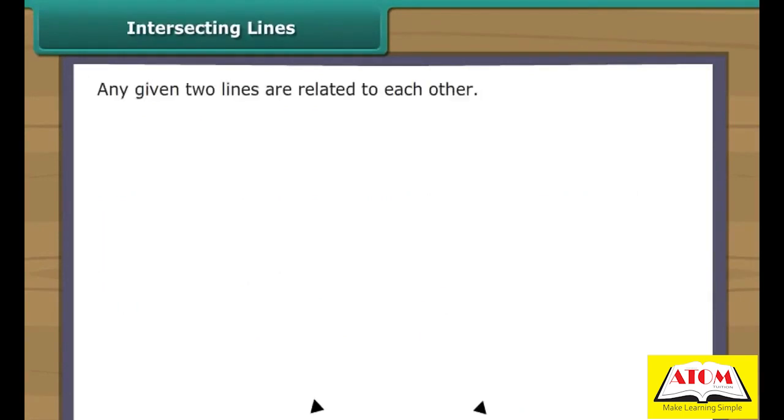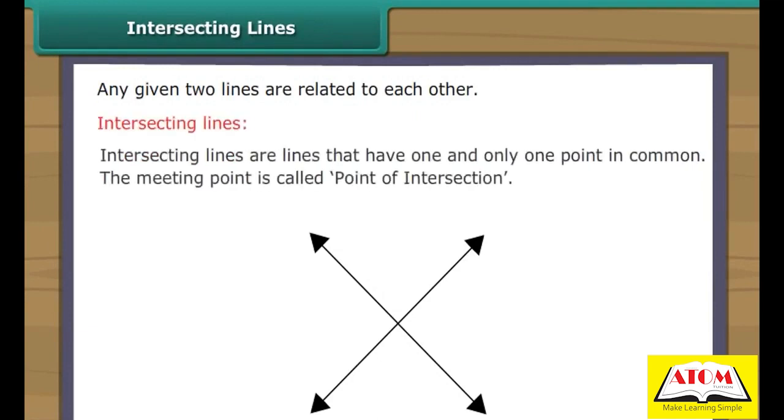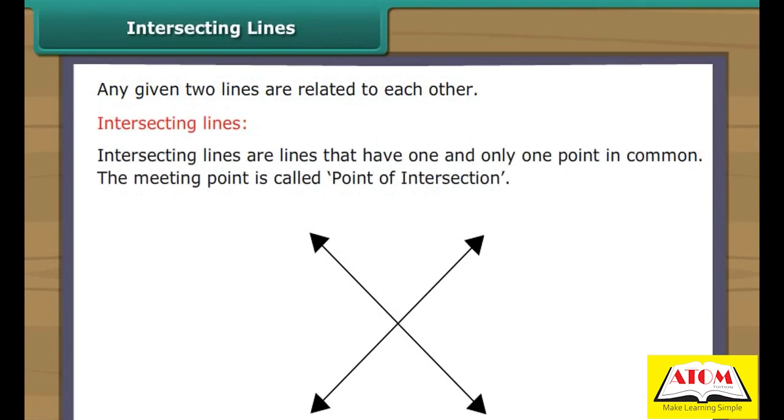Intersecting Lines. Two lines are related to each other in different ways. Let us look at each way separately. Intersecting lines are lines that have one and only one point in common. This meeting point is called point of intersection.